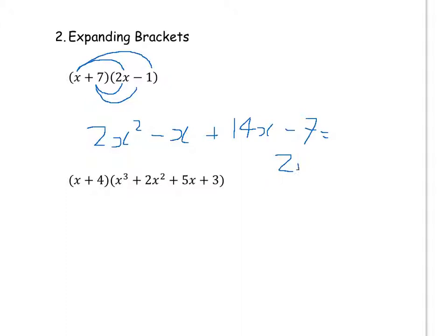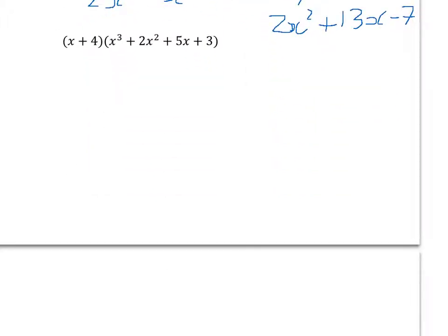Now we need to collect together the like terms again. The like terms here are minus x and plus 14x, so that makes plus 13x, and then minus 7 — and that's the answer. The second question is slightly more difficult because you're not just looking at x squared, but you've still got to multiply this x by everything in this bracket, and this 4 by everything in this bracket, and then collect the like terms.